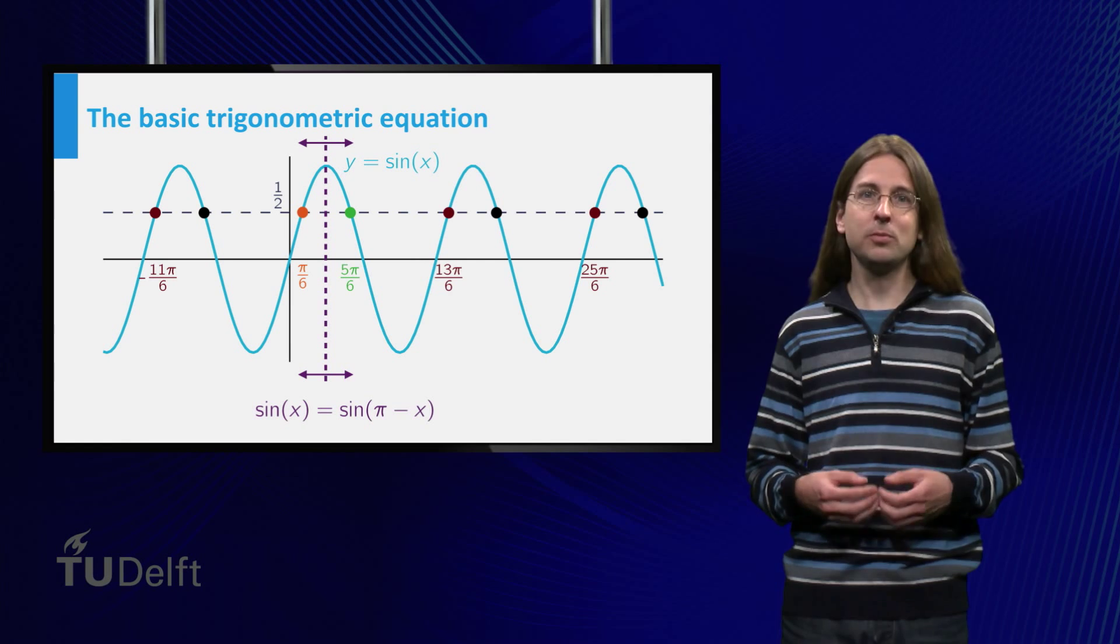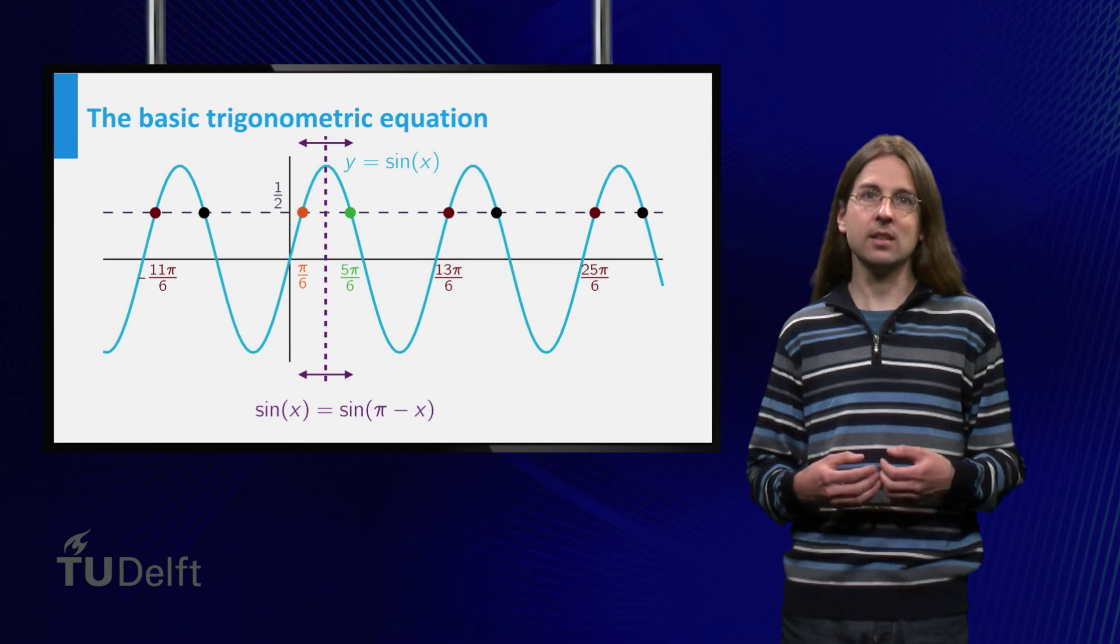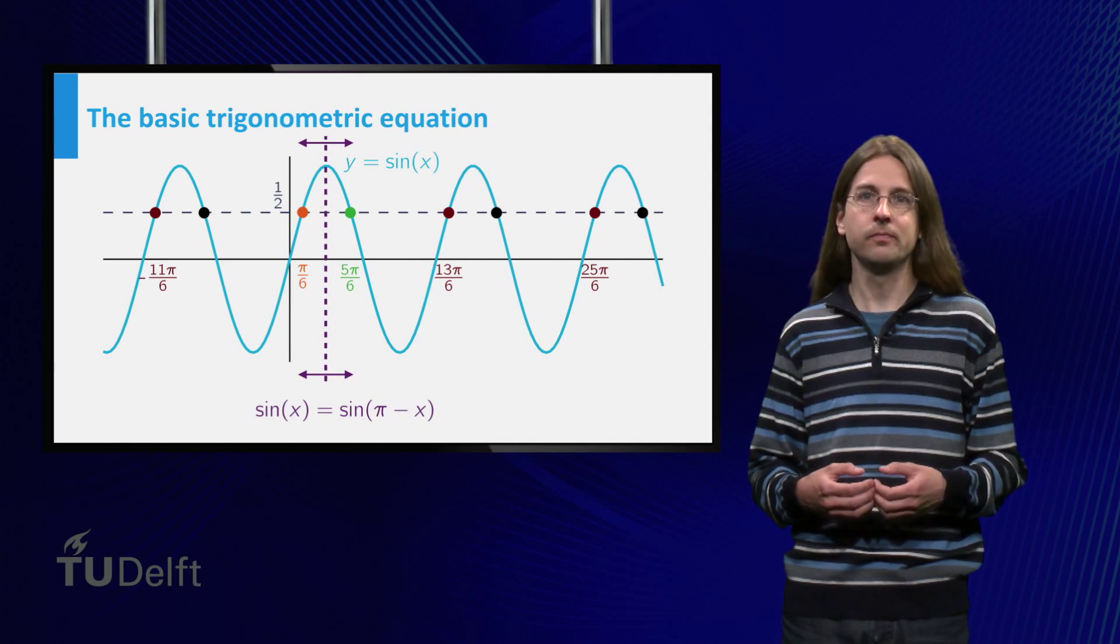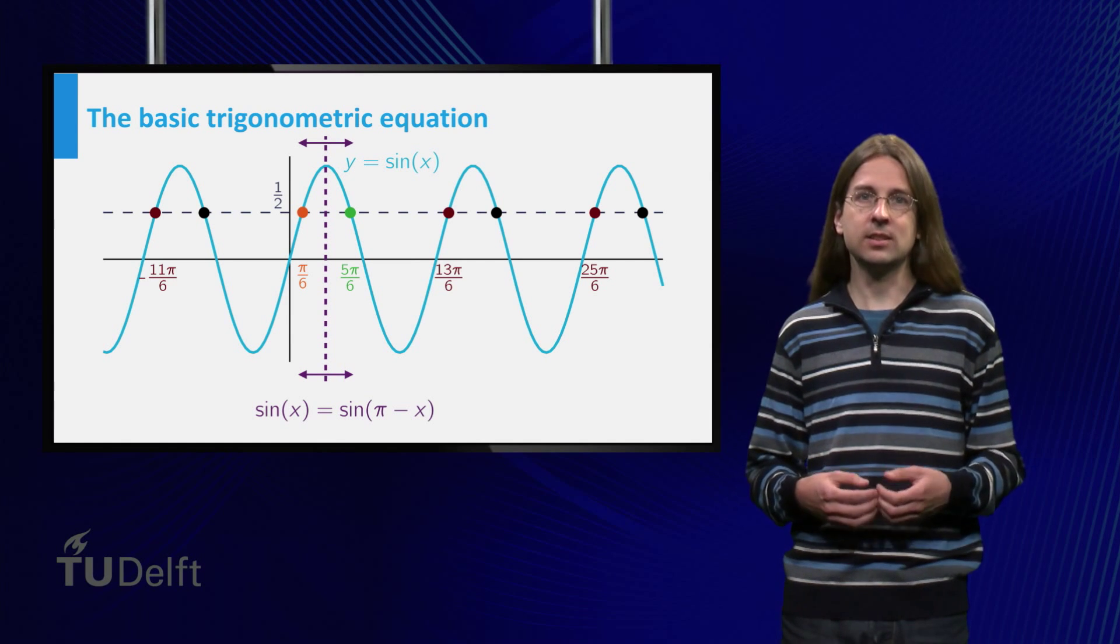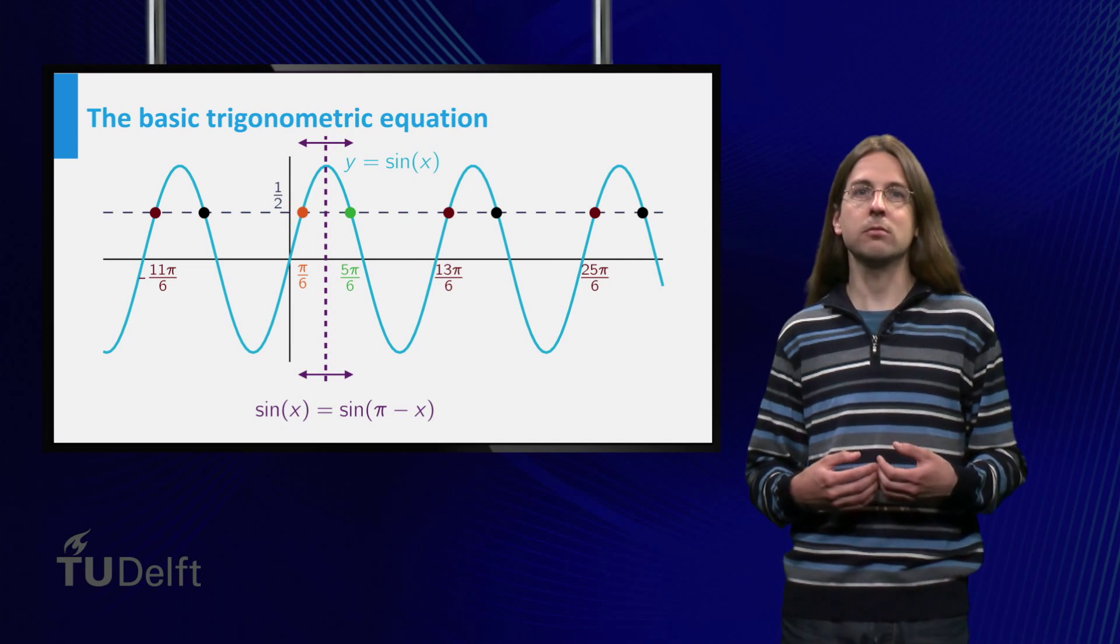The green point is obtained by using the symmetry of the graph of the sine upon reflecting in the line x = π/2. This reflection sends x to π - x, so it is π - π/6 = 5π/6.